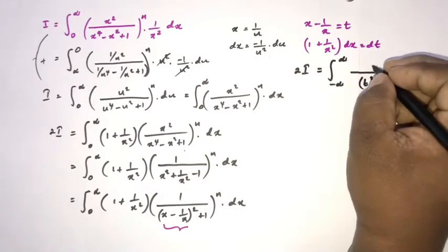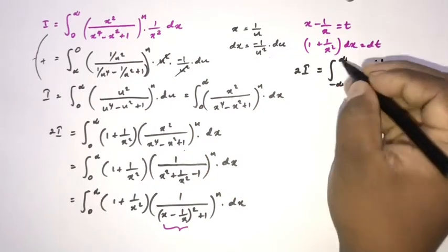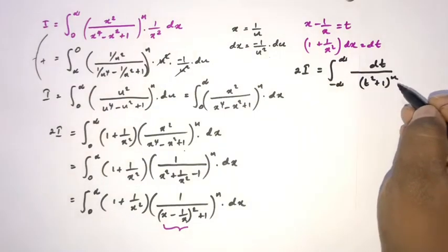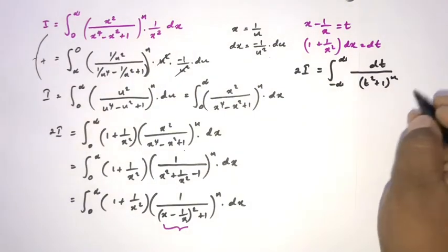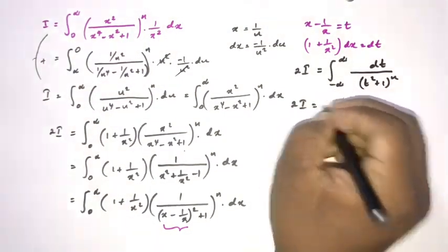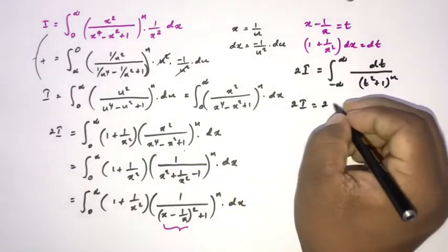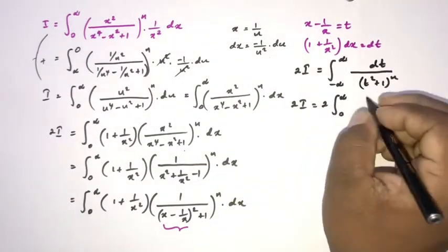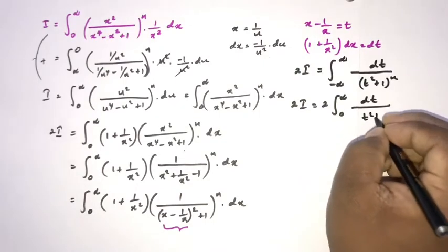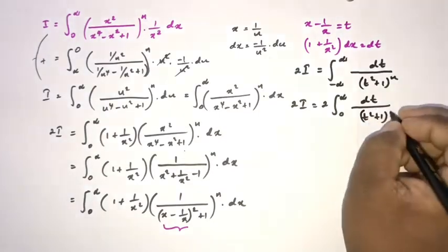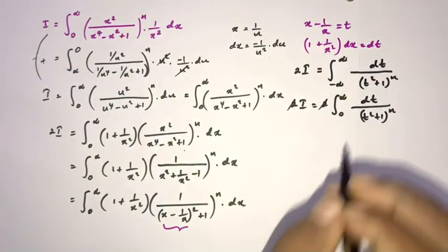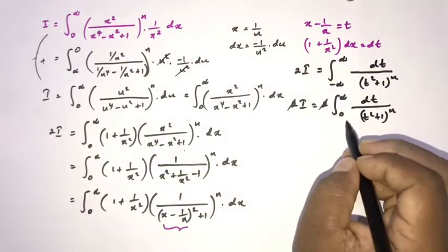We have the integral from minus infinity to infinity of dt over t squared plus 1, raised to the n-th power. By symmetry this equals 2 times the integral from 0 to infinity of the same integrand. The factor of 2 cancels, giving I equals the integral from 0 to infinity of dt over t squared plus 1, raised to the n-th power.